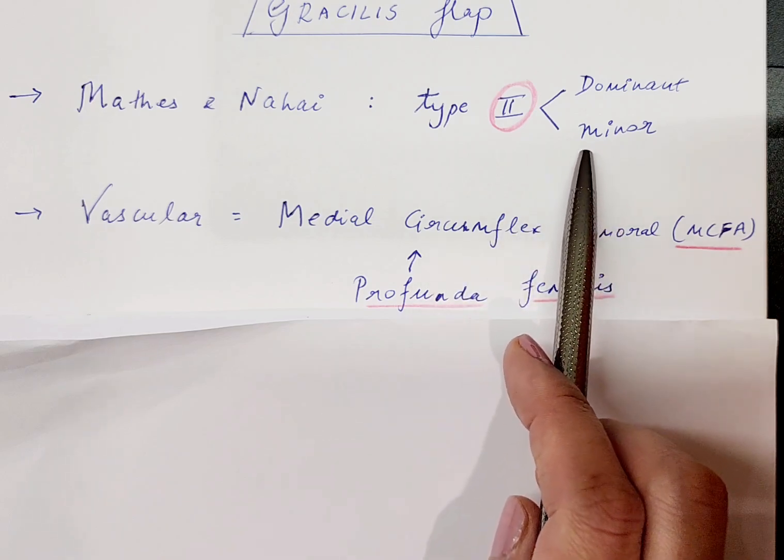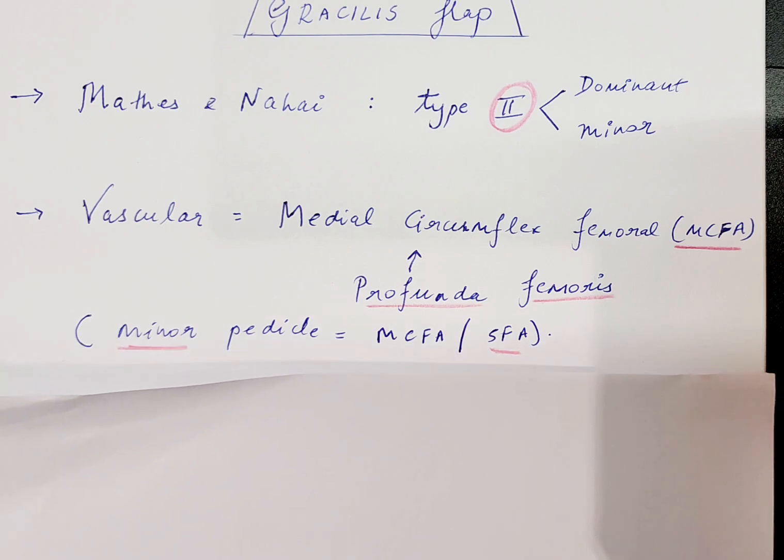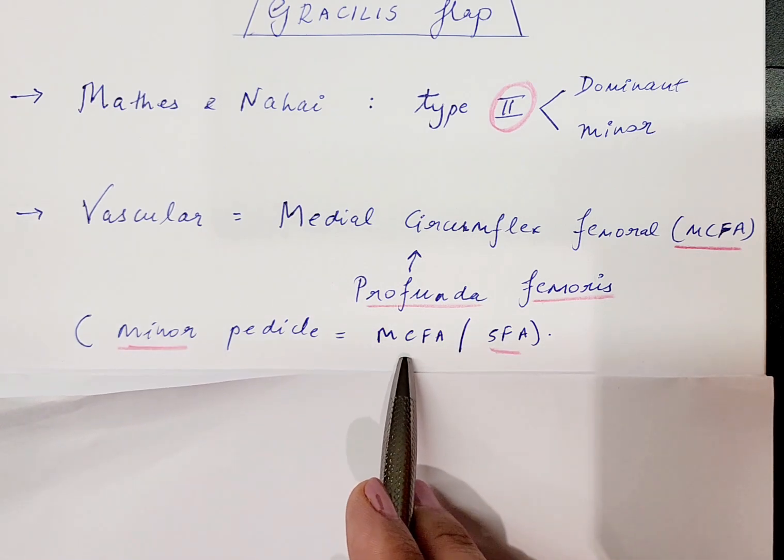A few other minor vessels or minor pedicles also supply this flap, which arise again from the MCFA or from the superficial femoral artery.